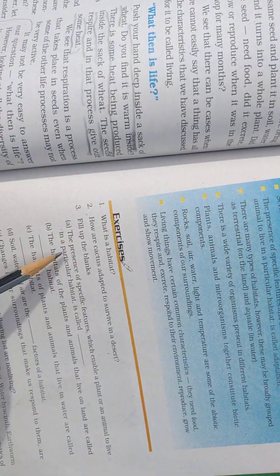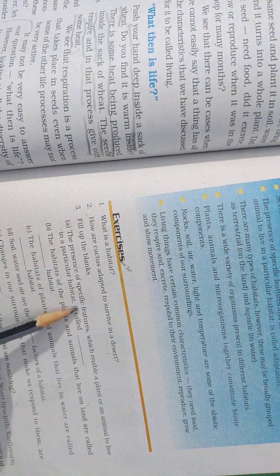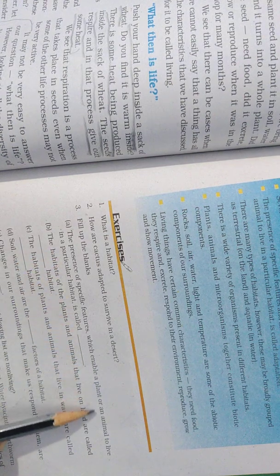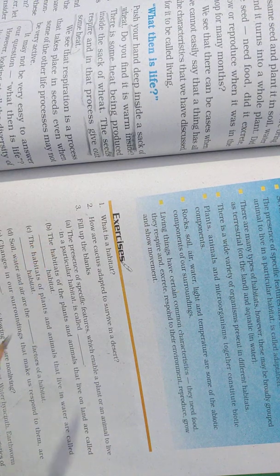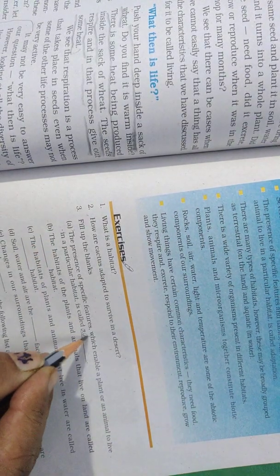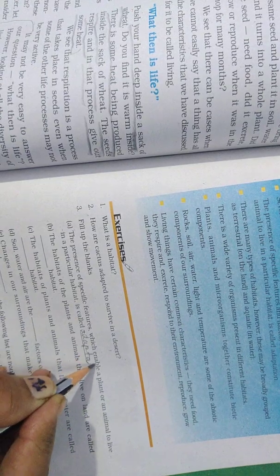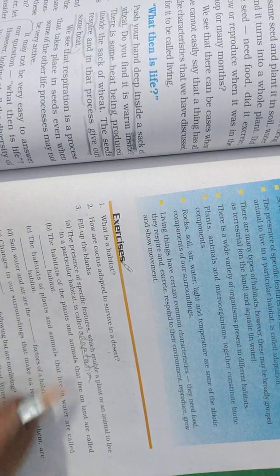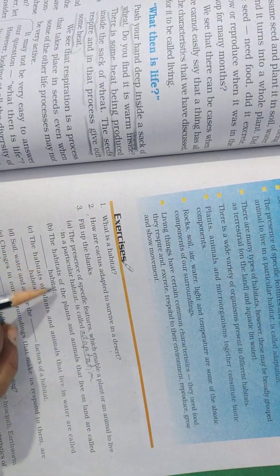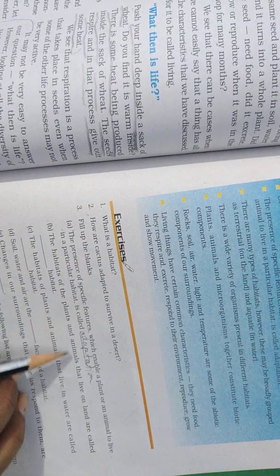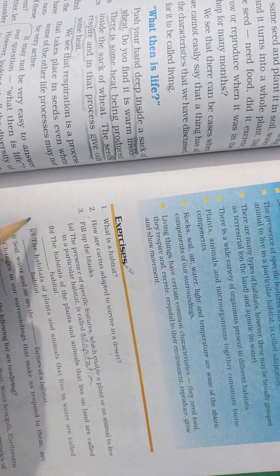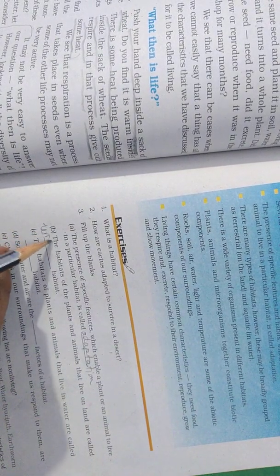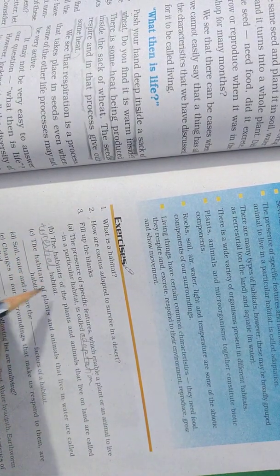Now let us try to do the fill in the blanks. The presence of specific features which enable plant or animal to live in a particular habitat is known as adaptation. The habitat of the plant and animal that live on land is called terrestrial habitat.